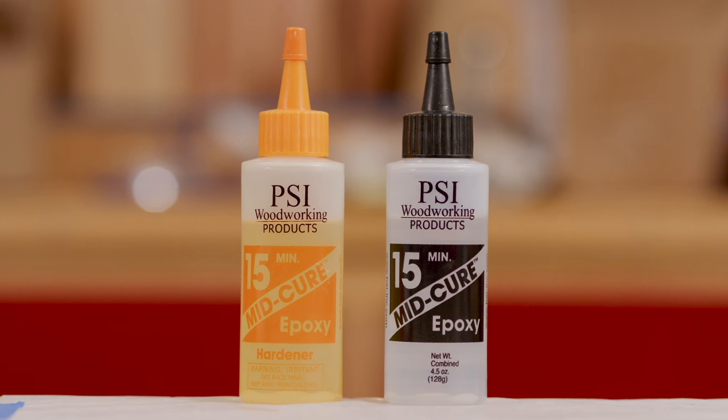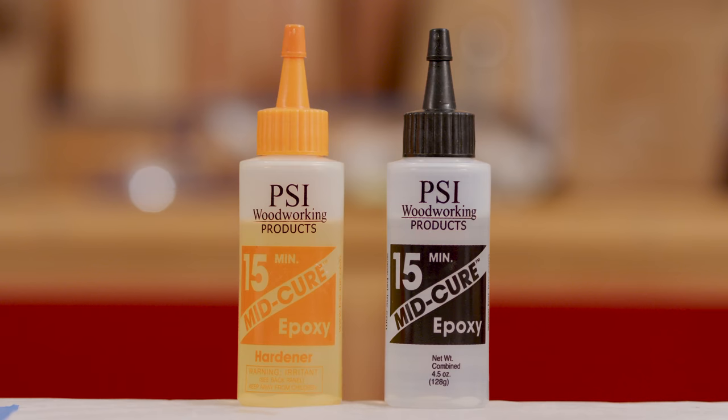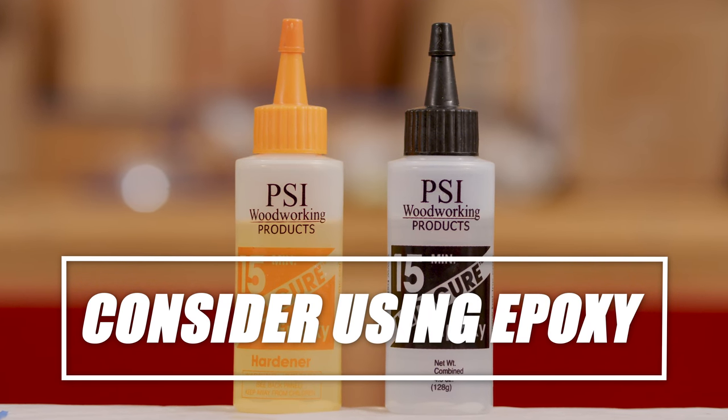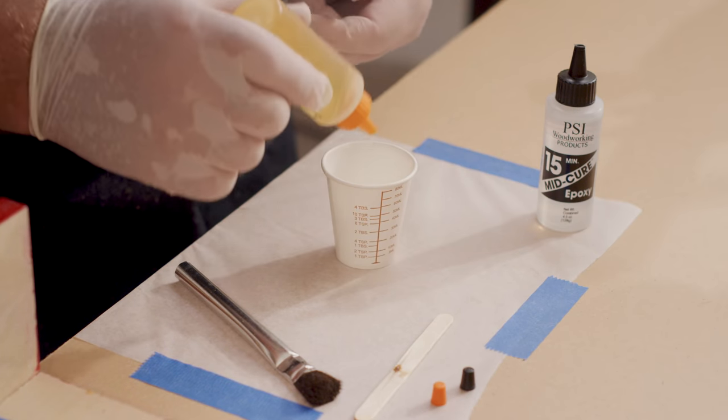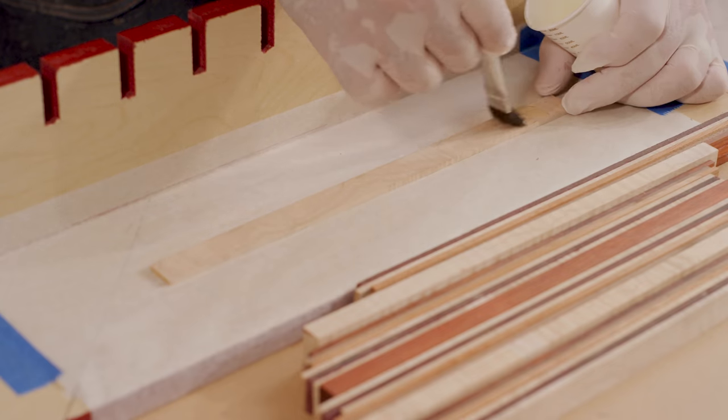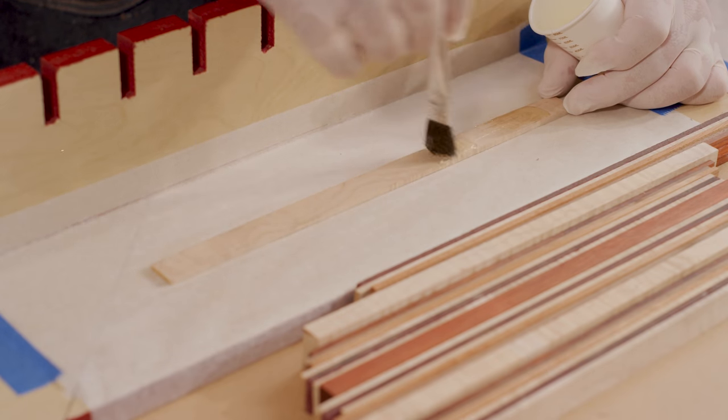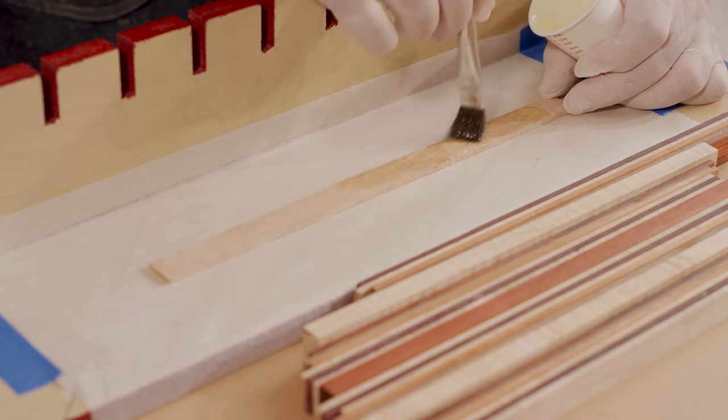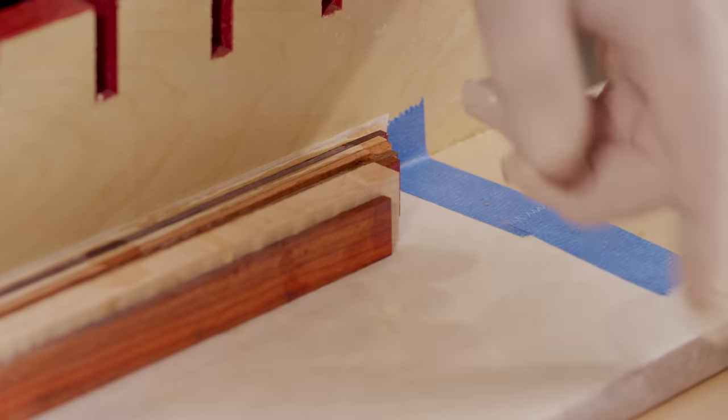Although you could use regular woodworker's glue to laminate the blanks, we recommend medium to slow set epoxy because of its gap filling properties. Dispense a correct ratio of epoxy resin and hardener in a small cup, mix thoroughly, then spread the epoxy evenly on all mating surfaces using an acid brush or craft stick. An even application ensures that no weak spots or gaps exist.